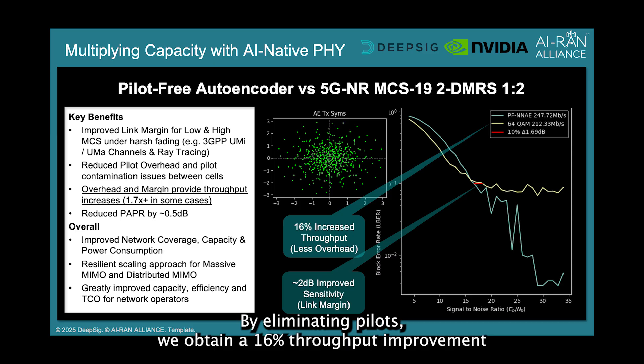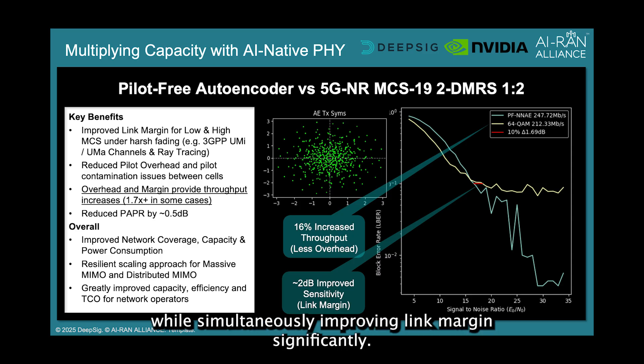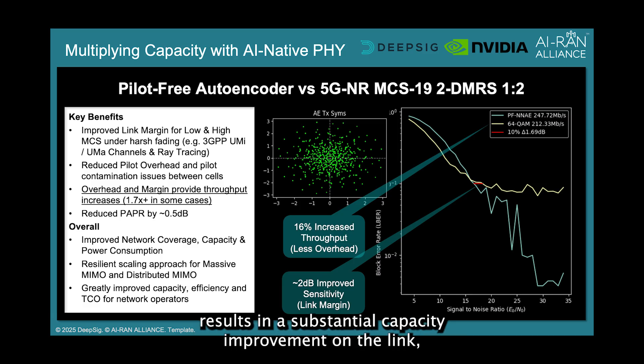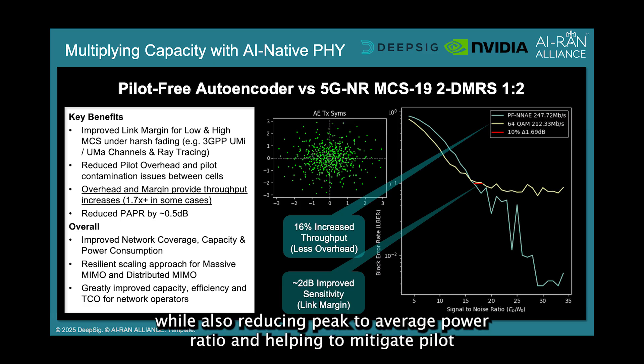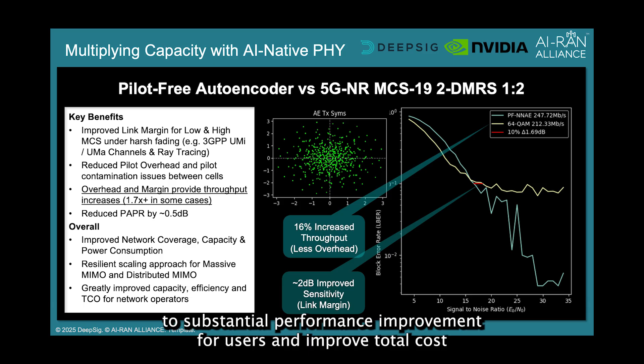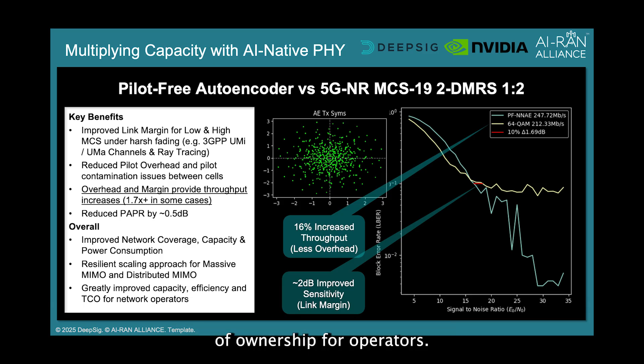By eliminating pilots, we obtain a 16% throughput improvement while simultaneously improving link margin significantly. Combining both of these effects by increasing spectral efficiency results in a substantial capacity improvement on the link, while also reducing peak-to-average power ratio and helping to mitigate pilot contamination in adjacent sectors, ultimately leading to substantial performance improvement for users and improved total cost of ownership for operators.